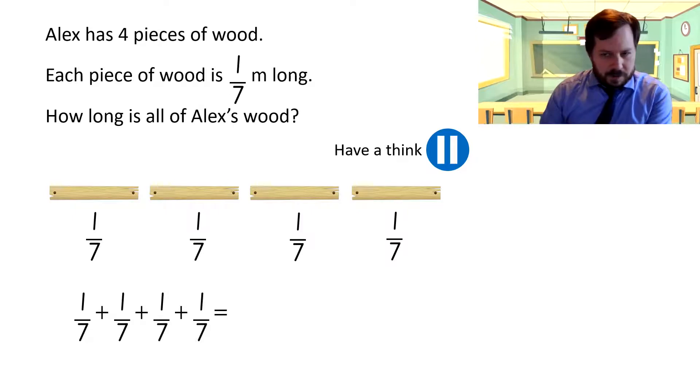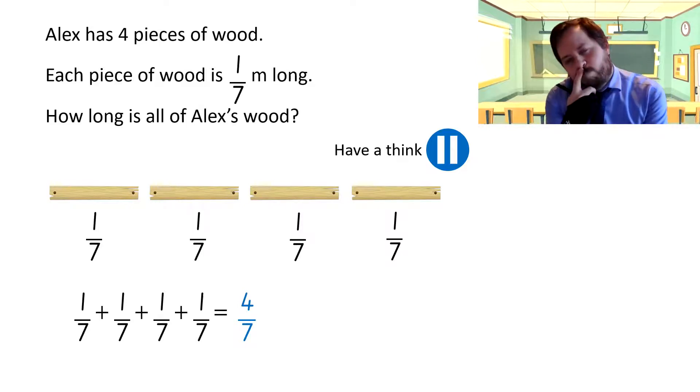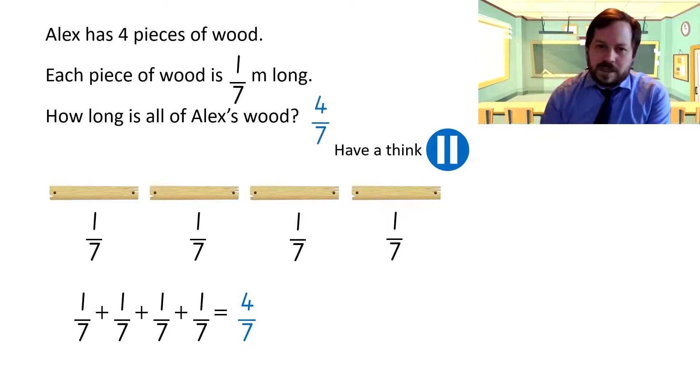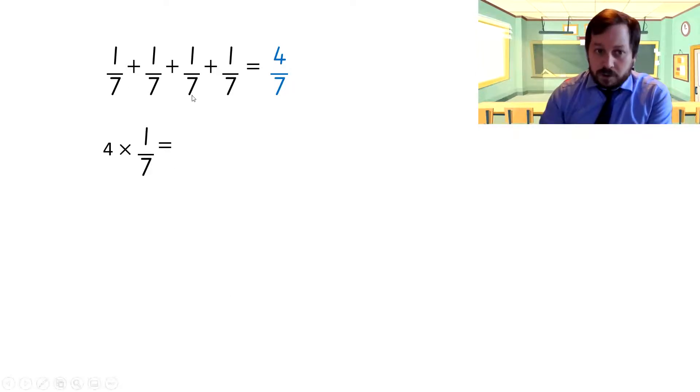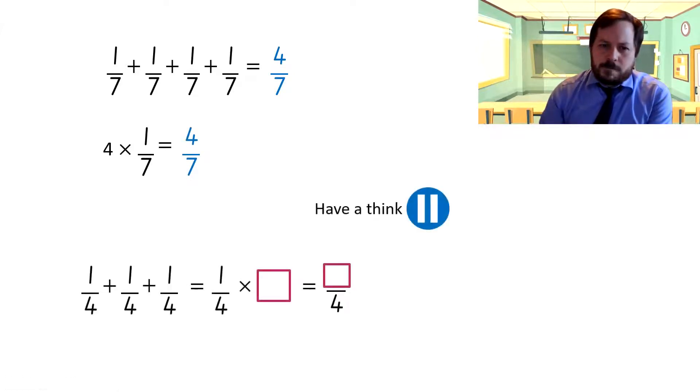One-seventh plus one-seventh is two-sevenths. Plus another seventh is three-sevenths. Plus another seventh is four-sevenths. Remember, when we're adding, we just add the numerator together, leaving the denominator as is. Four-sevenths. Interesting, isn't it? Because actually, that question, four one-sevenths, could also be written as four times one-seventh. Four lots of one-sevenths. Which is still four-sevenths. So what have we actually done? Four times one is four. And we've left the seven.